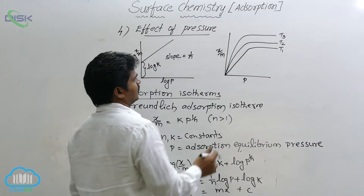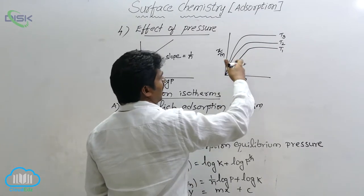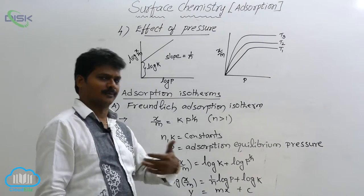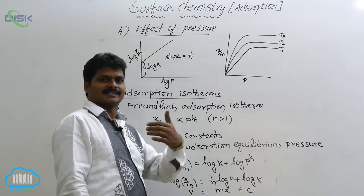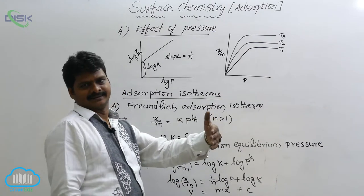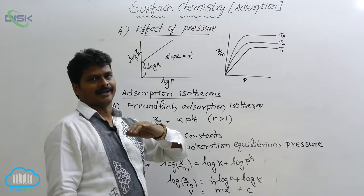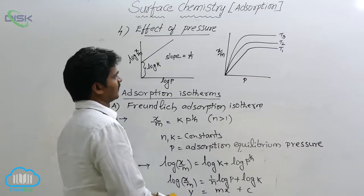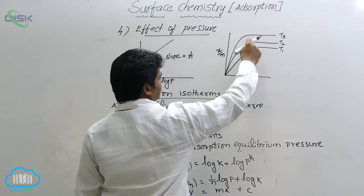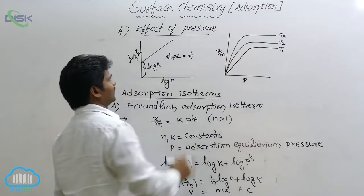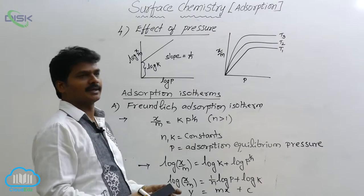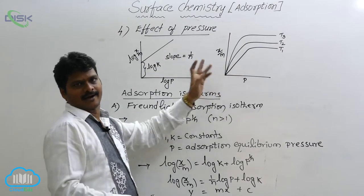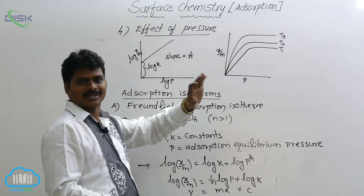What we can conclude is that up to some pressure only, in physical adsorption, the extent of adsorption increases. After that pressure, it remains constant. These curves are called adsorption isotherms because they are drawn at constant temperature.